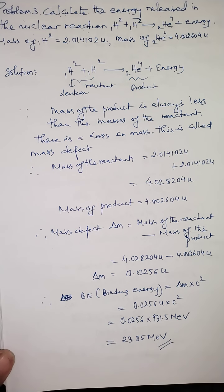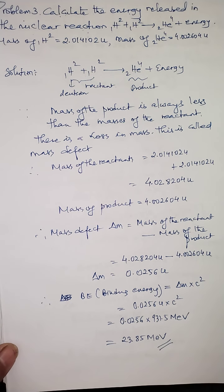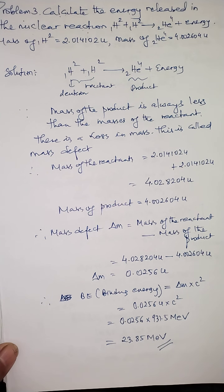With this numerical, the chapter on mass-energy equivalence is completed. Now we will start the new chapter on nuclear fusion and nuclear fission, which is the last chapter under unit number eight.